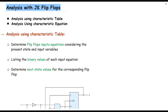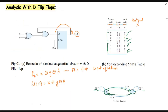Before this lecture we covered how to analyze a given sequential circuit using a D flip-flop. In a D type flip-flop, the flip-flop input equation is the same as the state equation of the system, because the data available at the D input is transferred to the output A. That is why when using D type flip-flops, the input equation and the state equation are both the same.